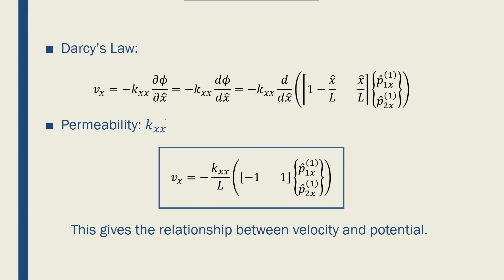Darcy's law relates the velocity to potential using this equation: v of x is equal to minus kxx times ∂φ over ∂x, and kxx is permeability, which is the property of the medium through which the fluid flows. And these values are given in tables and fluid mechanic textbooks.